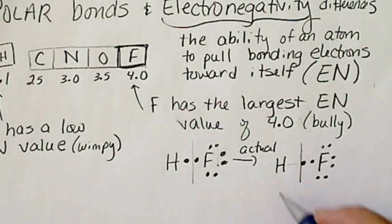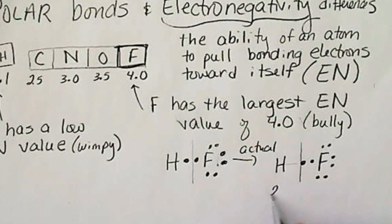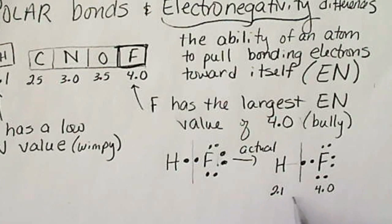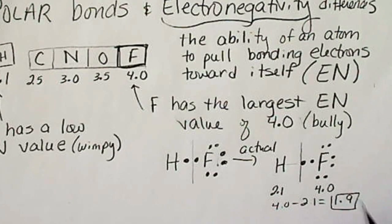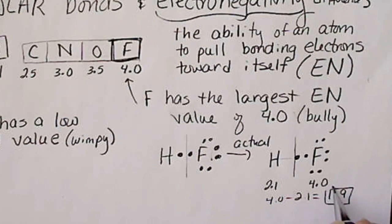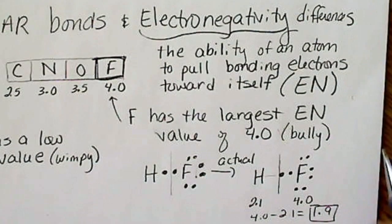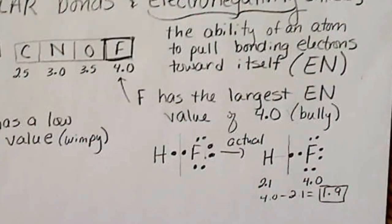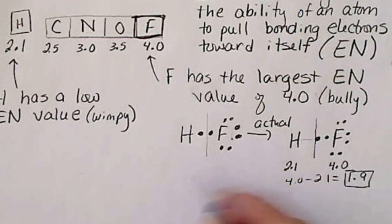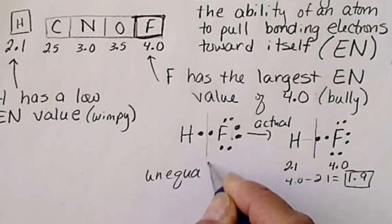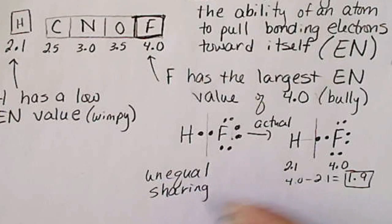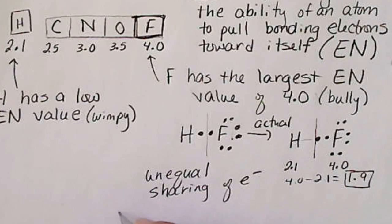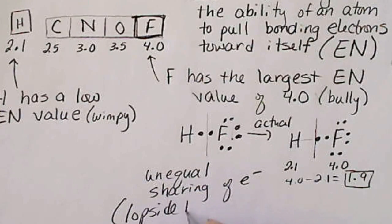And so this would be a difference in electronegativity, so 2.1 and 4.0. So the difference between that, if we subtract 4.0 minus 2.1, we get 1.9. That's a fairly substantial large difference in electronegativity. And we're going to see that if there is a big difference between atoms, then the bond is going to be lopsided.